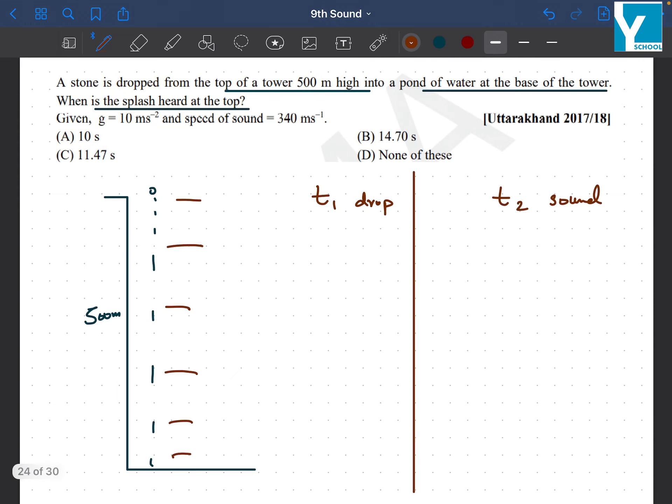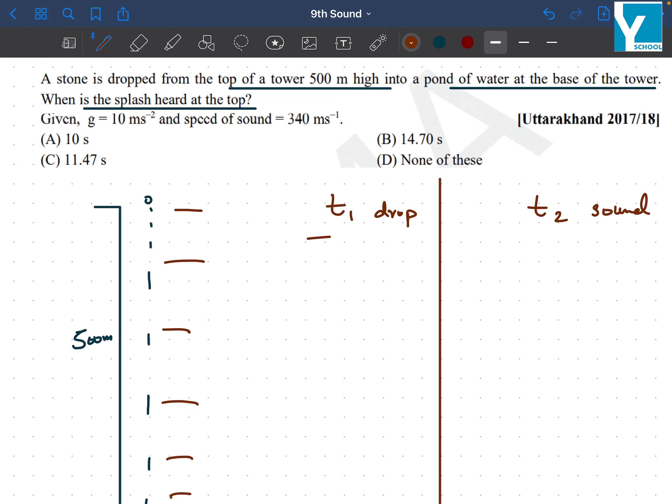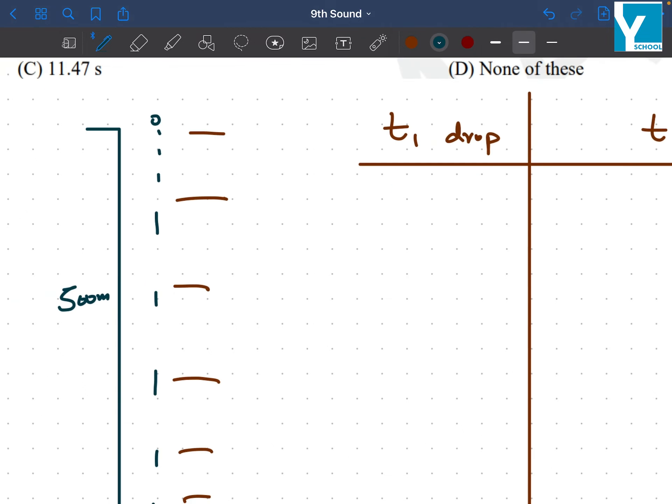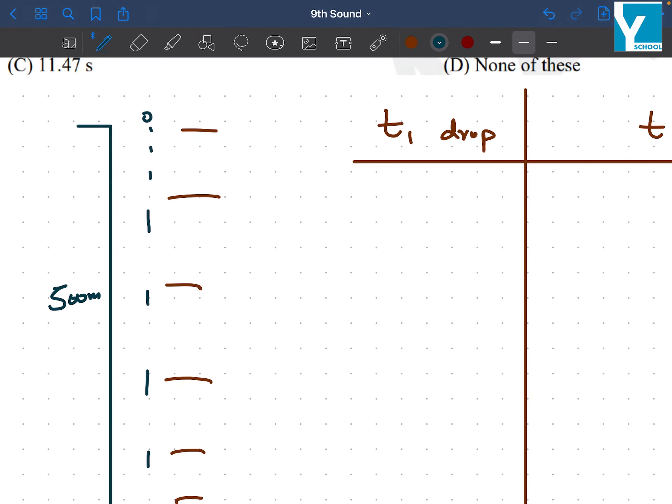So the drop can be solved in such a manner. We have s equals ut plus half at squared. This will be the easiest equation here.